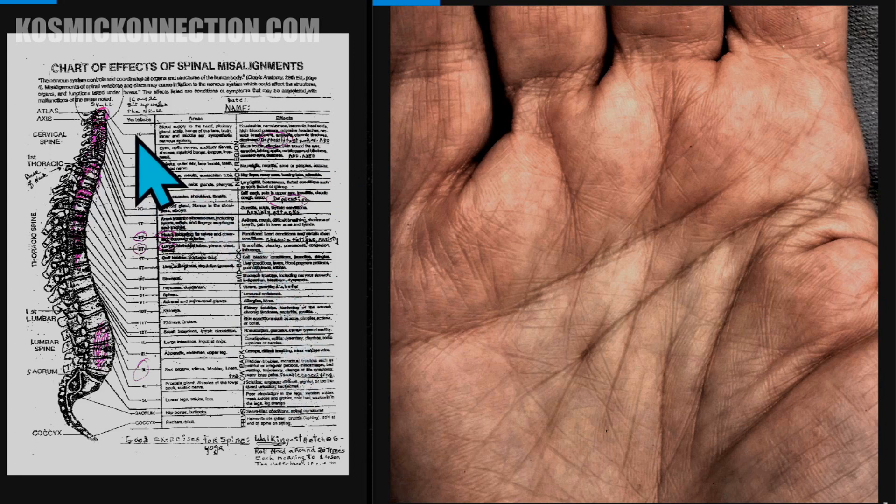Underneath that Jupiter finger, starting in between your thumb and your Jupiter finger, going along the headline. Under the Jupiter finger, it's going to show your cervical vertebrae 1 through 7. Underneath the Saturn finger, it's going to show your thoracic vertebrae 1 through 12. And then underneath the Sun finger, it'll show your lumbar vertebrae 1 through 5. And under that little Mercury finger, it'll show your tailbone, your sacrum, your coccyx.